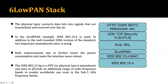IEEE 802.15.4g is a physical layer amendment that aims to provide an additional range of radio frequency bands to enable worldwide use, even in the sub-1 GHz frequency band. These changes in the physical layer target lower power consumption and expand the available frequency range.